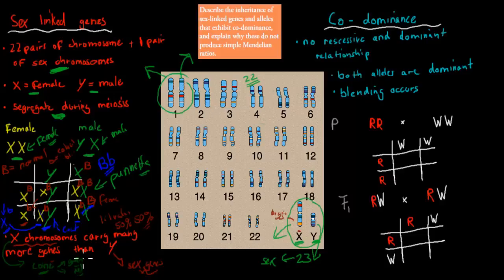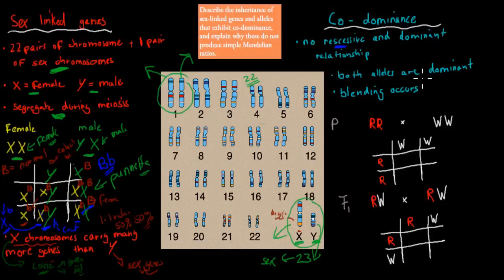You can see how that's not like normal Mendel genetics. The other concept was co-dominance. Co-dominance is a bit more straightforward. In co-dominance there is no recessive relationship — in Mendel genetics we have dominant and recessive, but here both alleles are dominant. And then blending occurs, which means usually the dominant one takes the phenotype, but with co-dominance both alleles blend together.